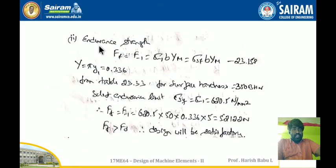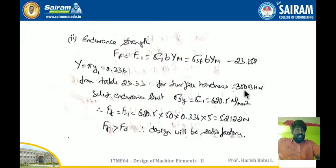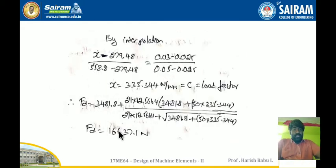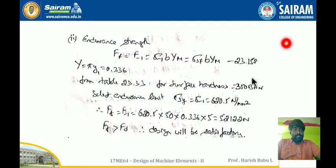For the endurance check, endurance strength FF = σ_SF × Y × M × B, where Y = π × Y1 (Lewis form factor) and σ_SF is the endurance limit from table 23.33. Since the hardness of the pinion (being the weaker member) is 350 BHN, σ_SF = 620.5 N/mm². Substituting σ_SF, B = 50 mm, Y = π × Y1, and M = 5 mm, FF = 52122 N. Since FF = 52122 N > FD = 16637.1 N, the design is satisfactory — endurance strength is greater than the dynamic load.